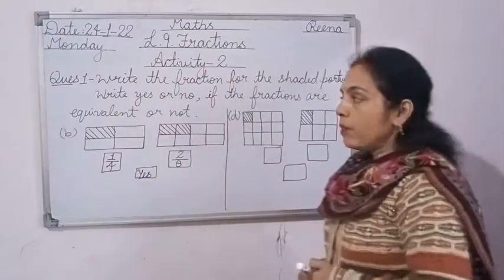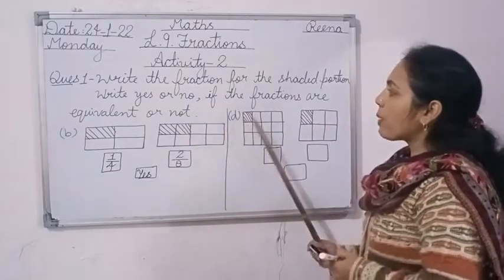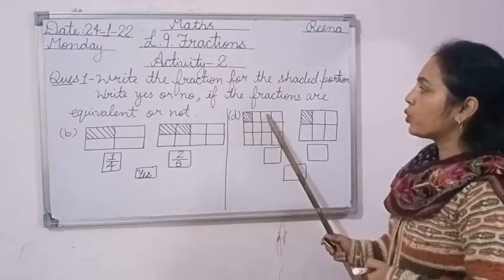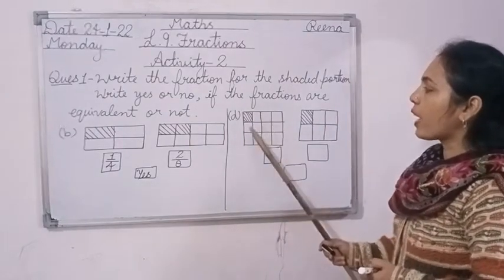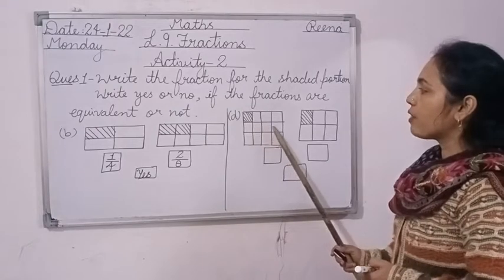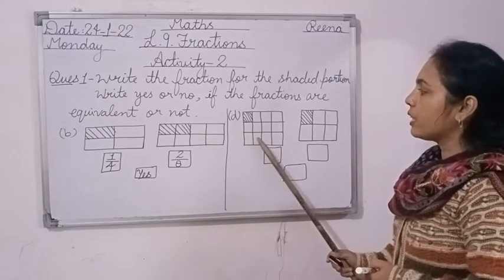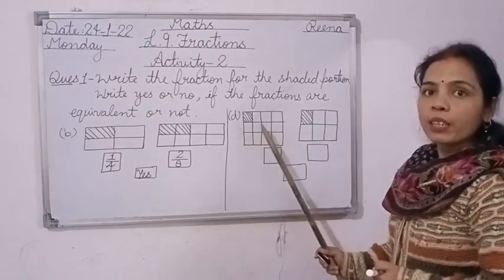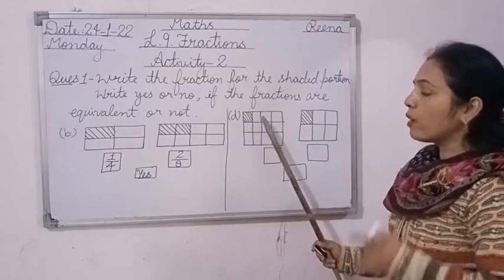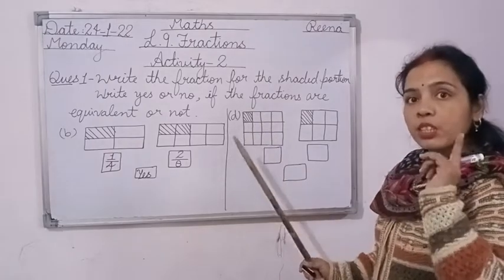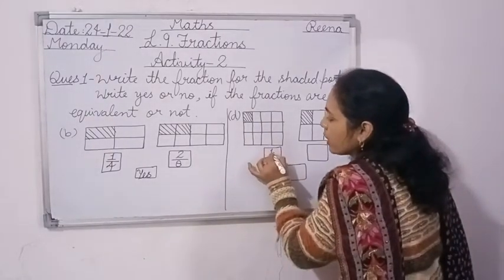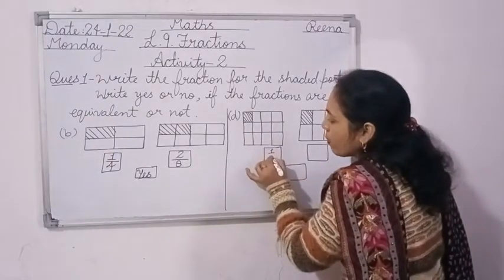So the answer is yes, both are equivalent. Now in part D, the first figure has 12 total parts and only one part is shaded, so write 1 upon 12 as the fraction for the shaded part.